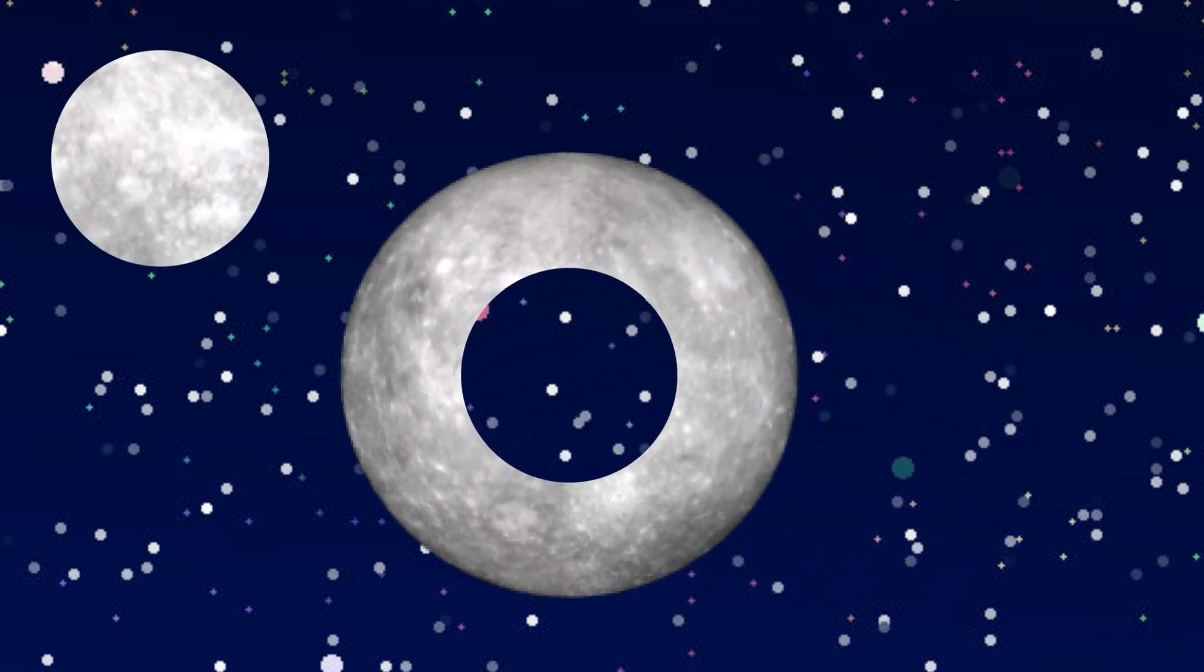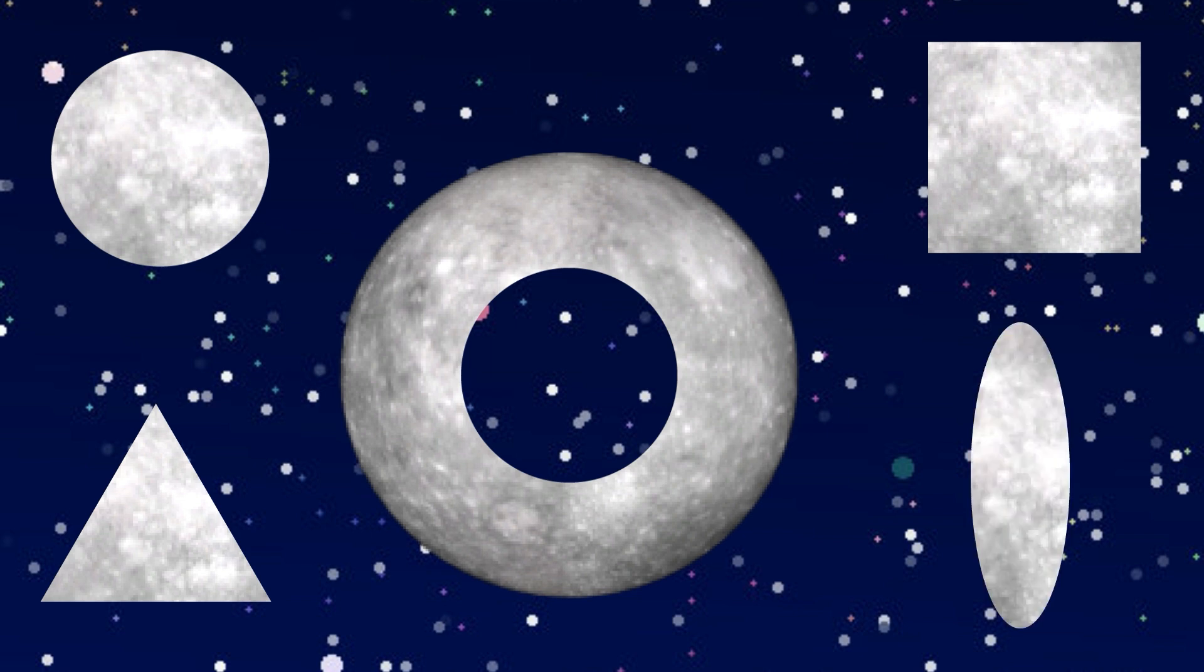Circle, Triangle, Square, Ellipse. What is this?